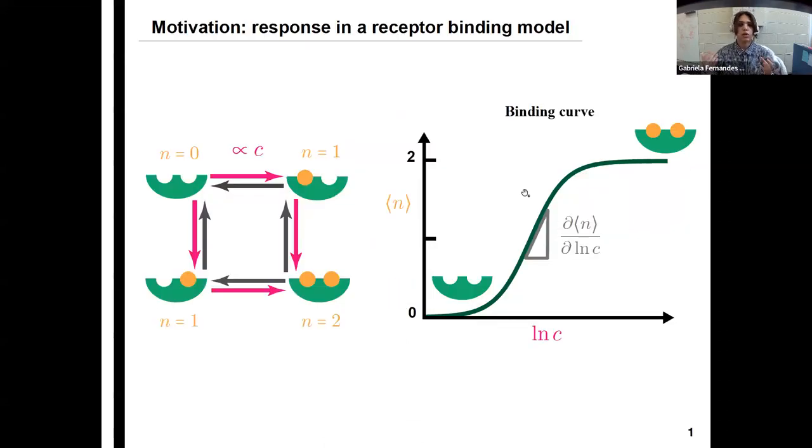In order to motivate our results, I will use a receptor binding model where we have a receptor here in green. In this case, we assume it has two binding sites and ligands here in yellow can bind and unbind. So we can have one at the left, one binding at the right, or two of the sites being bound.